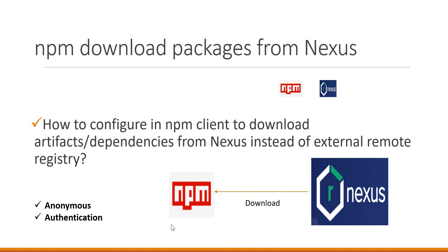In the diagram, we have an NPM client. This NPM client can be in Windows operating system, Linux operating system, or Mac operating system. If we don't have Nexus registry, the NPM clients will download the packages from external public registry. We are going to see how to configure the client to download the packages from Nexus registry instead. We will consider two cases: one without any authentication, meaning anonymous users, and in the second case, how to configure authentication to download the corresponding NPM packages.